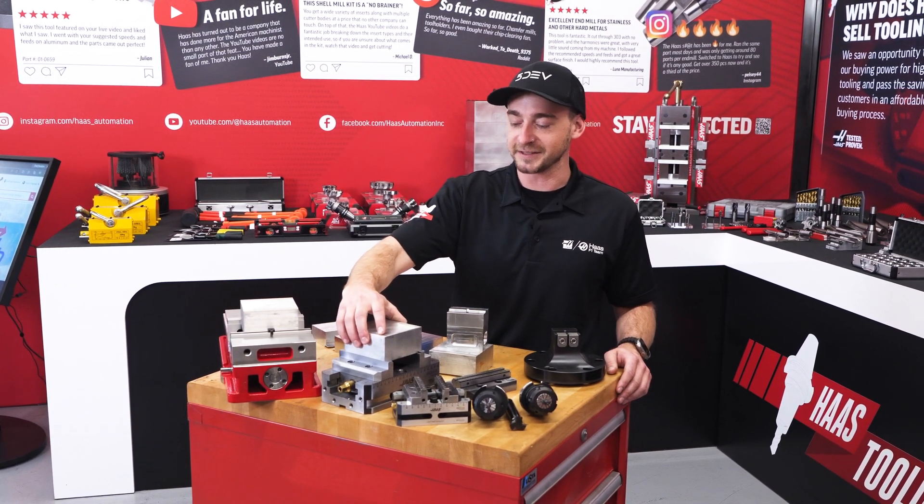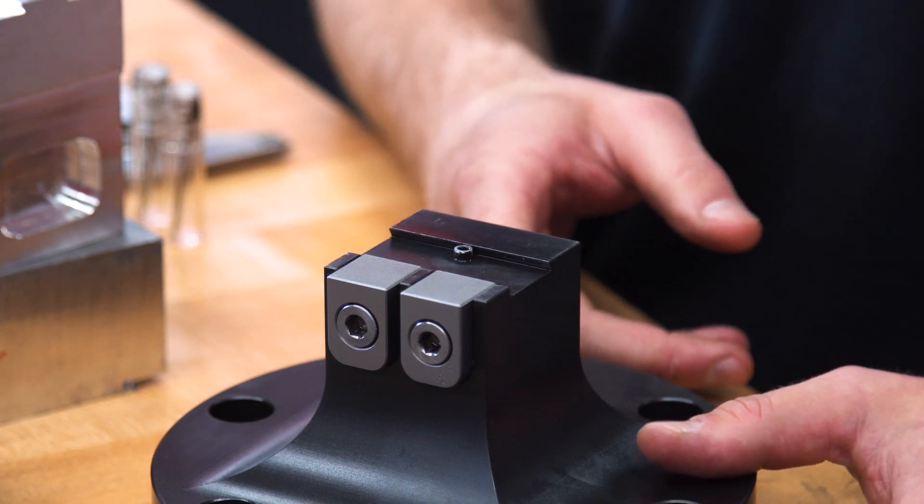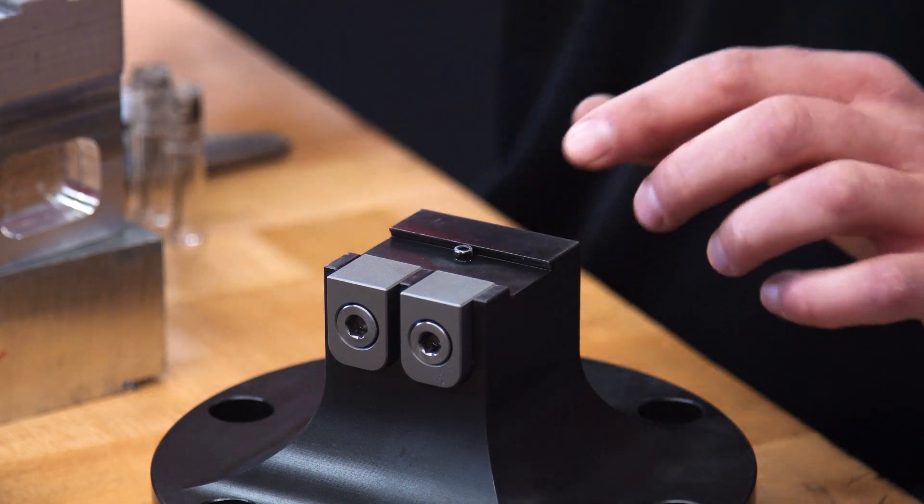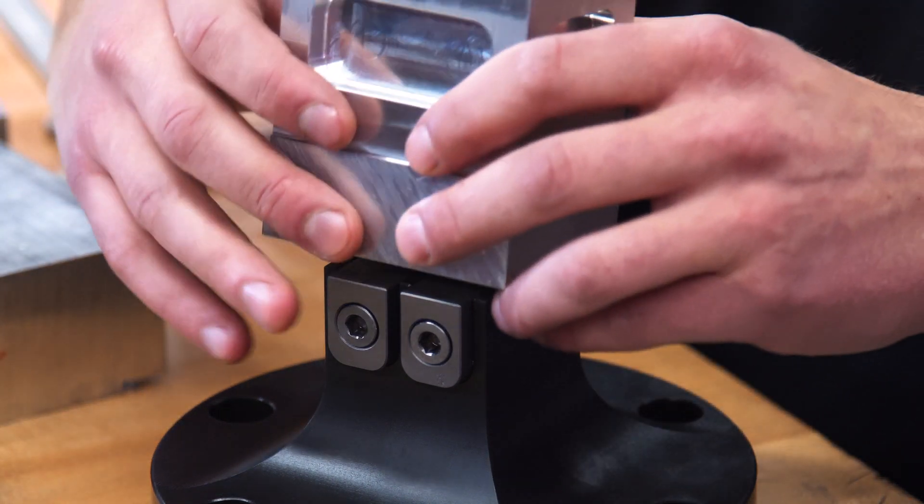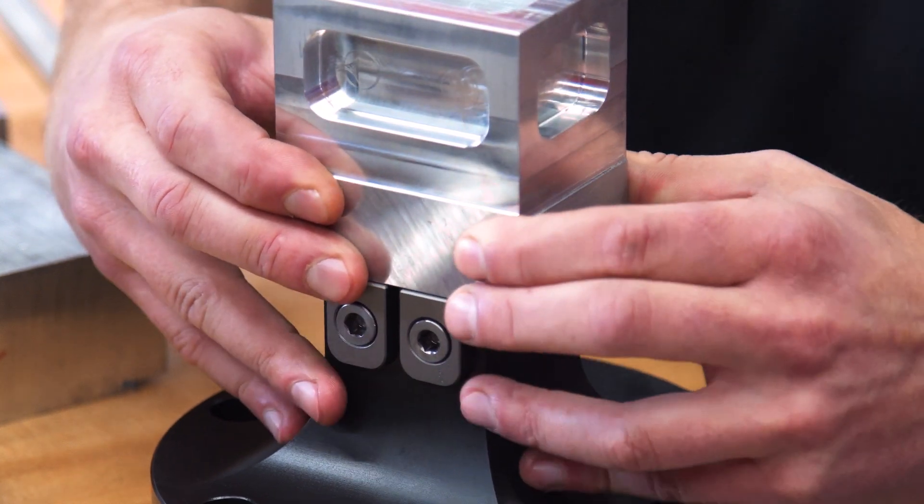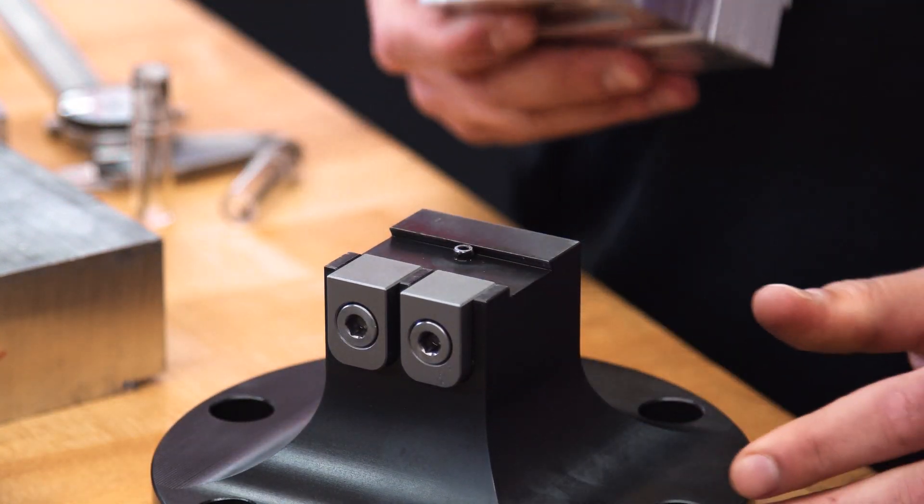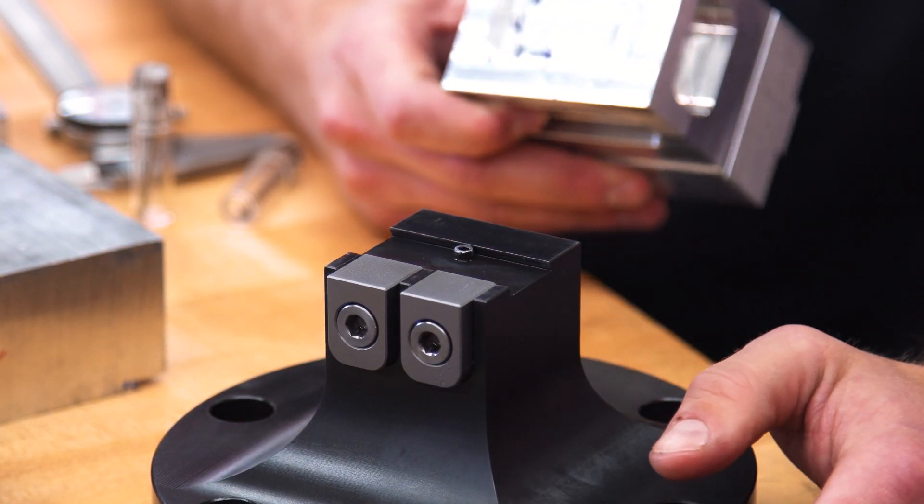There's still a little side-to-side action which is why these dovetail specific fixtures often incorporate a pin. This eliminates that side-to-side degree of freedom and perfectly locates your part. Keep your eyes peeled for these rotary specific fixtures coming soon to Haas tooling.